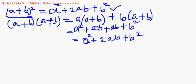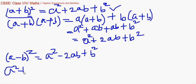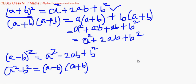Even if you don't remember, sometimes you can derive it as well. Now for the expansion of (a − b) whole square: you do the same thing, (a − b) multiplied twice, and you will get a squared minus 2ab plus b squared. The third identity is a squared minus b squared, which gives us (a − b)(a + b).